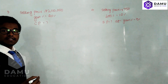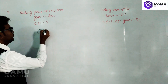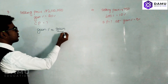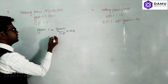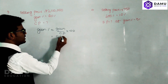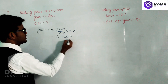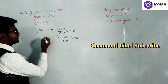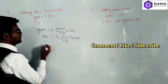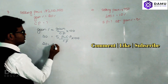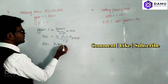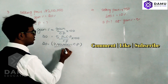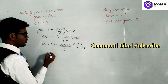Gain percentage formula: gain percentage equals gain divided by cost price, multiplied by 100. So gain equals selling price minus cost price, divided by cost price, multiplied by 100. The gain percentage is 20, and the selling price is two lakh forty thousand rupees.